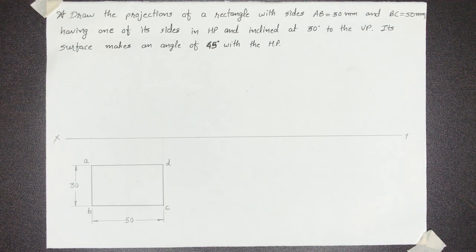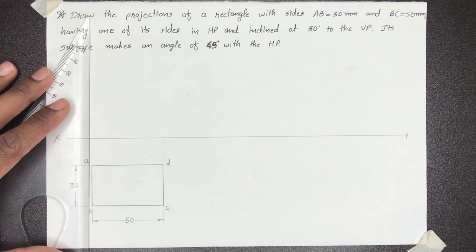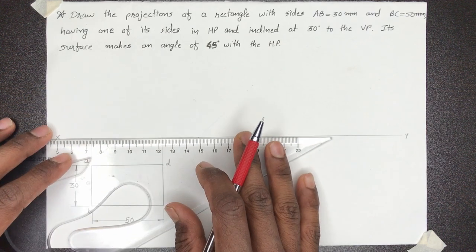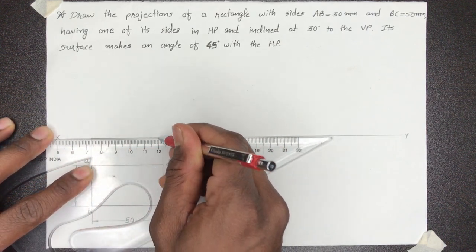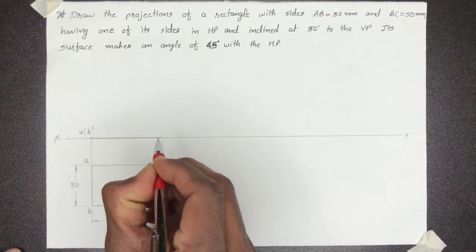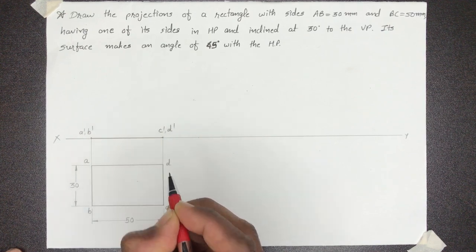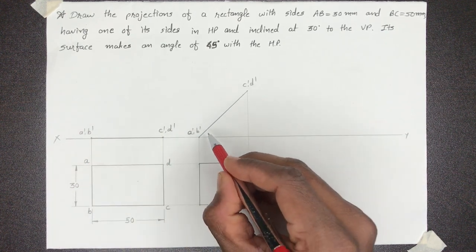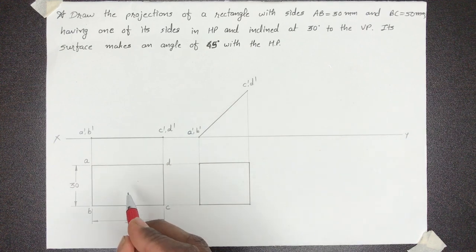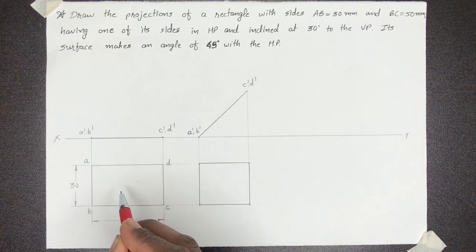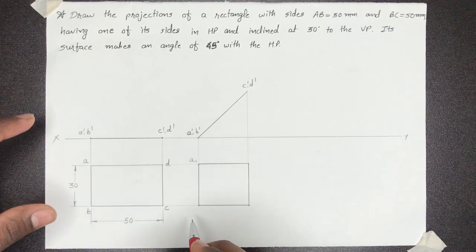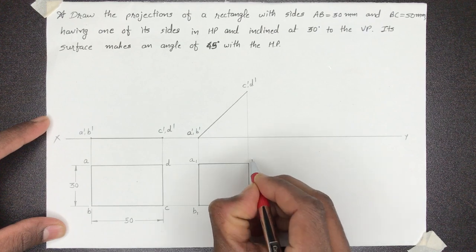Rectangle को हमने HP पे रखा है, तो उसका front view हमें XY पे मिलेगा. यहाँ पे मिलेंगे A' और B', और यहाँ पे मिलेंगे C' और D'. Step 1 से Step 2 में front view का shape change नहीं हुआ, तो naming हम यहाँ पे same रखेंगे. Top view में Step 1 में true shape है और Step 2 में shape change हो गया, तो naming होगी A1, B1, C1, D1.